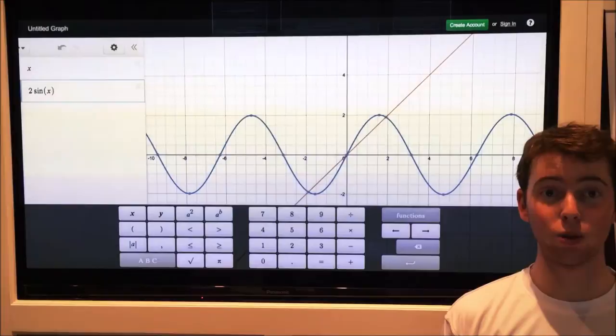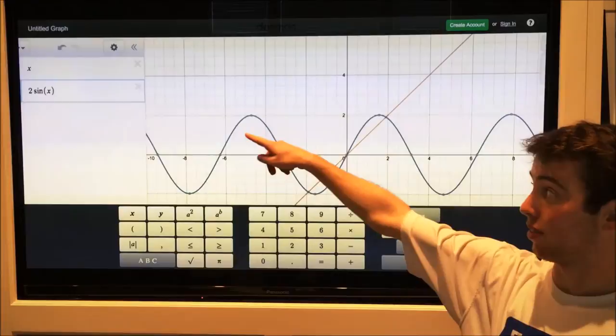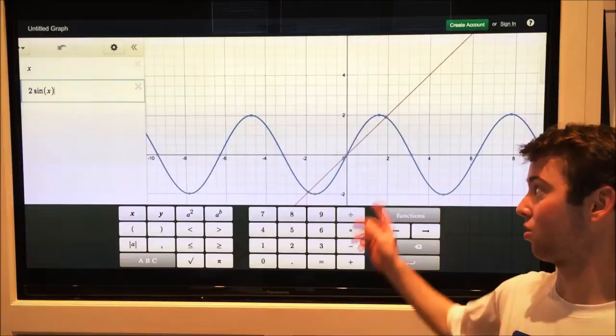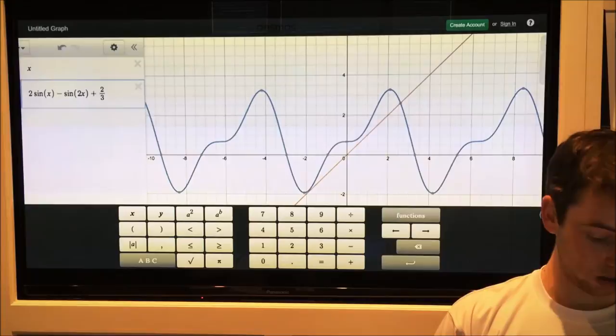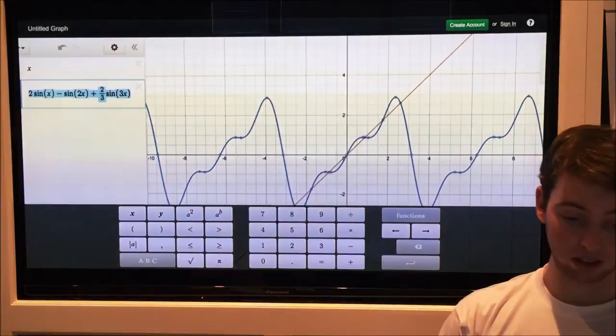Here we have the graph of f of x, which is the function we are using the Fourier polynomial to emulate. We have the first instance of the Fourier polynomial, so if big n had been equal to 1, this is what we would have. But you'll notice that as we add more instances of n, the graph becomes more and more accurate to the graph we are meant to be emulating. If we add all five instances of n, the following is what we have.